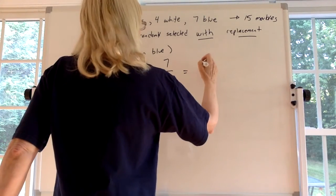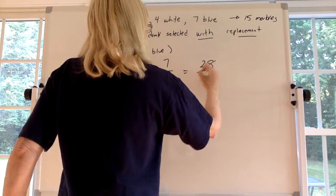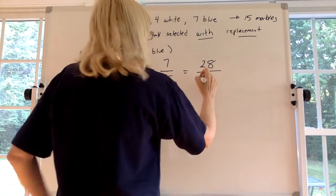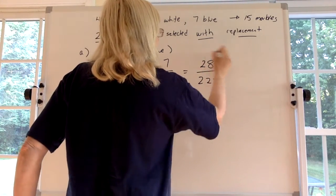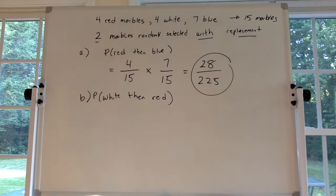If you multiply the top, 4 times 7 is 28. If you multiply 15 by 15 you get 225 and I don't think you can reduce that. So that would be the answer for part A.